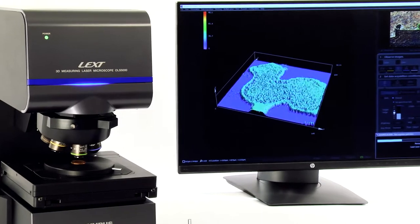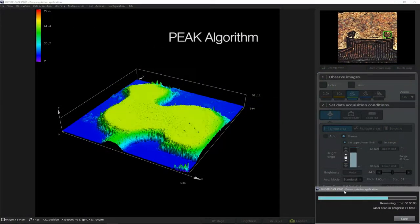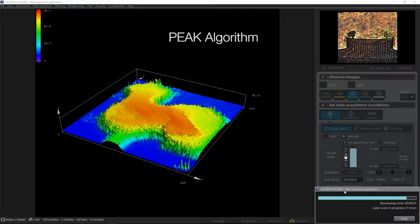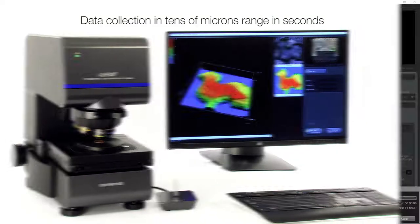The system's precision measurements are balanced with speed. With the new peak algorithm, the OLS 5000 Laser Microscope can collect data in the tens of microns range in just a few seconds.